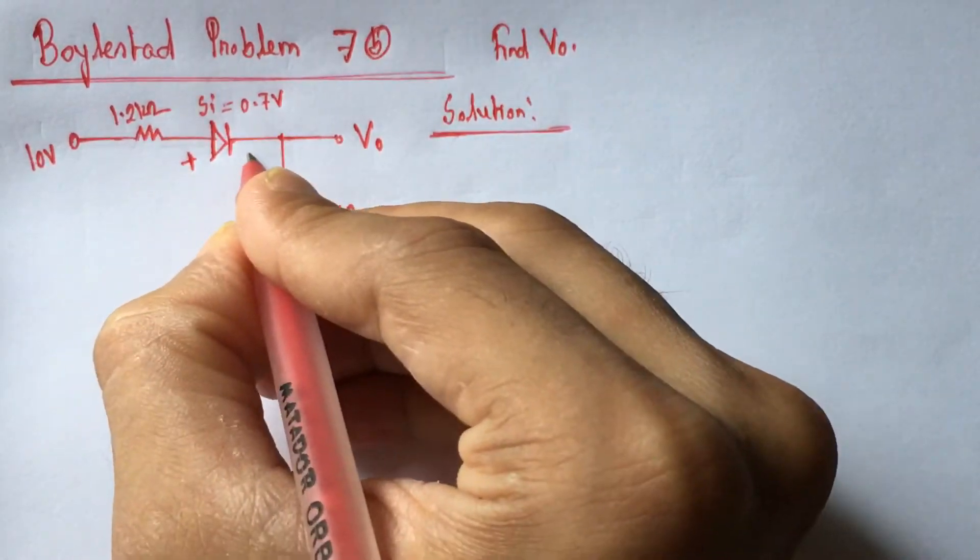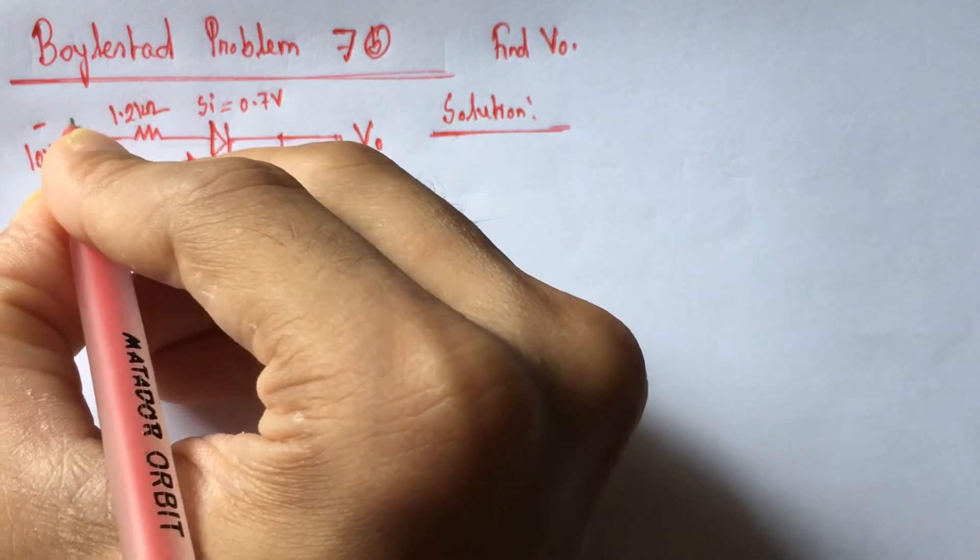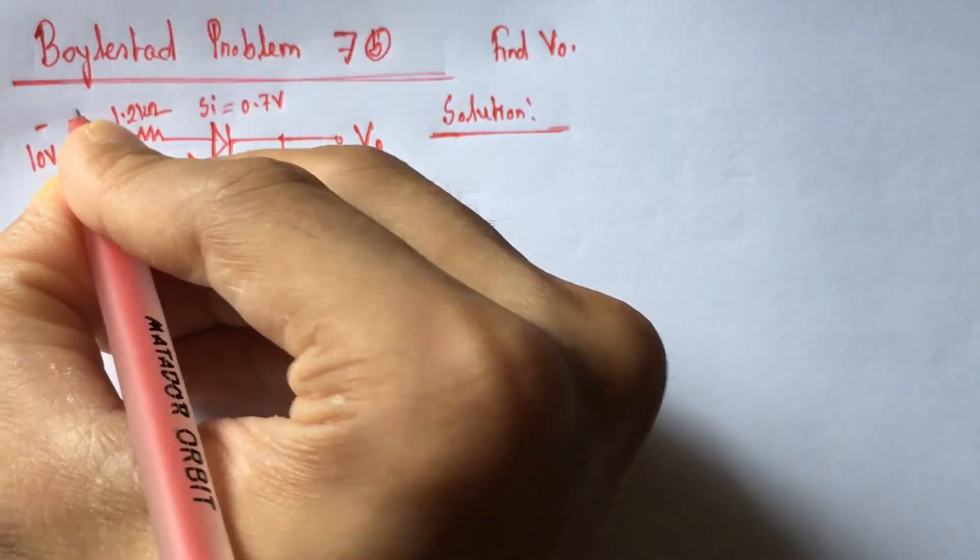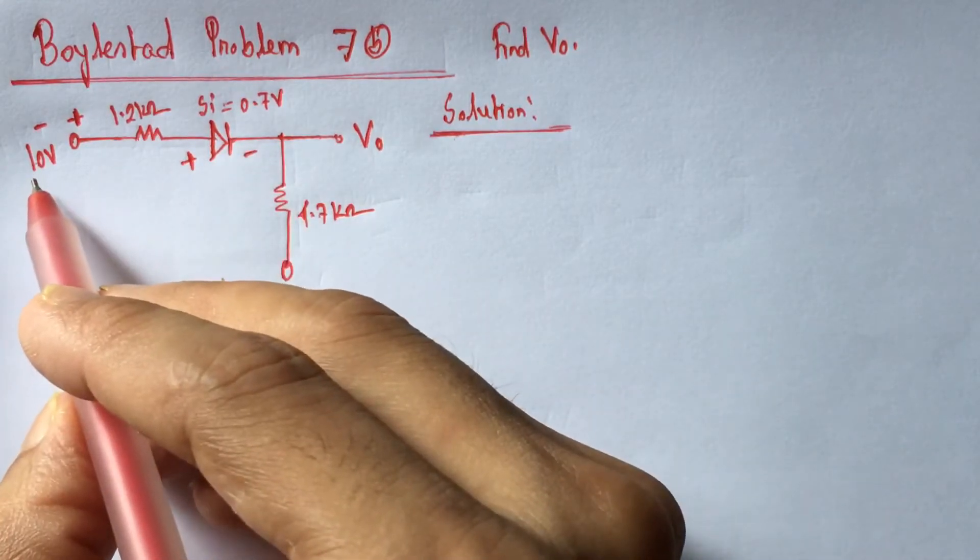This is the positive polarity of the diode. This is the negative polarity of the diode. This is the negative polarity of the biasing voltage. This is the positive polarity of the biasing voltage. From the circuit, we see that the diode is forward biased by a voltage of 10 volt.